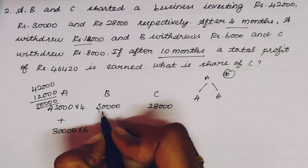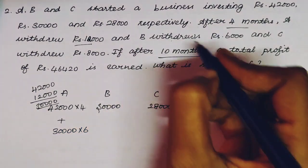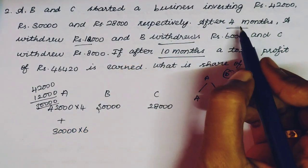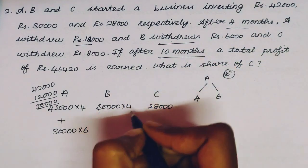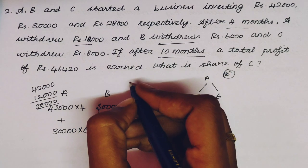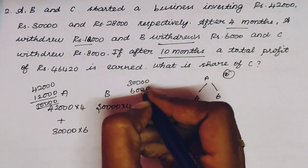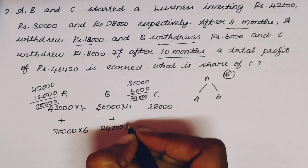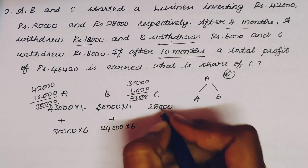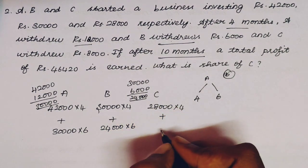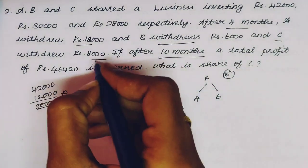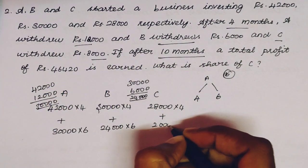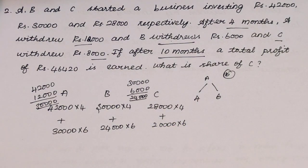For B: initial investment 30,000 for 4 months, then after withdrawing 6,000, the remaining 24,000 for 6 months. For C: initial investment 28,000 for 4 months, then after withdrawing 8,000, the remaining 20,000 for 6 months. Now find the profit ratio as usual.